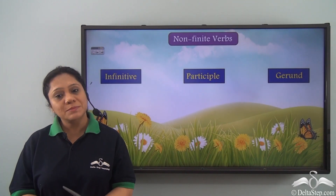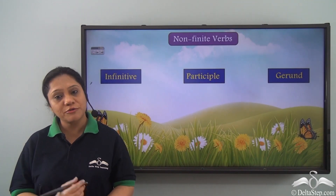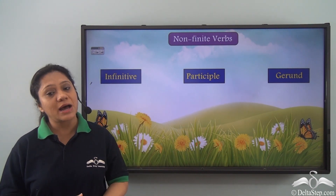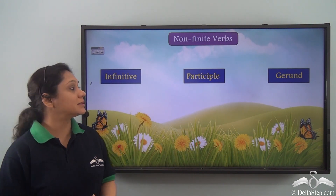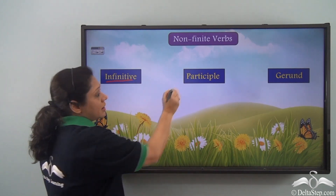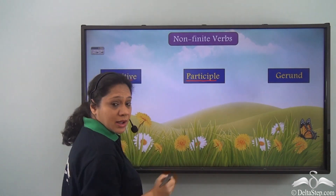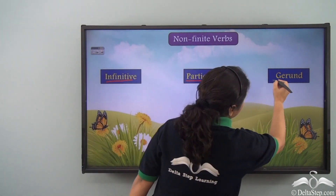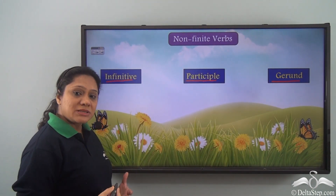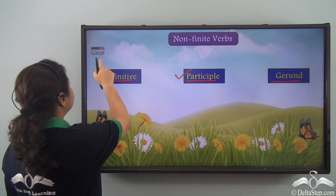We know that verbs can be finite or non-finite, and that non-finite verbs are of three kinds: the infinitive, the participle, and the gerund. Today we will be learning about a particular kind of the participle.